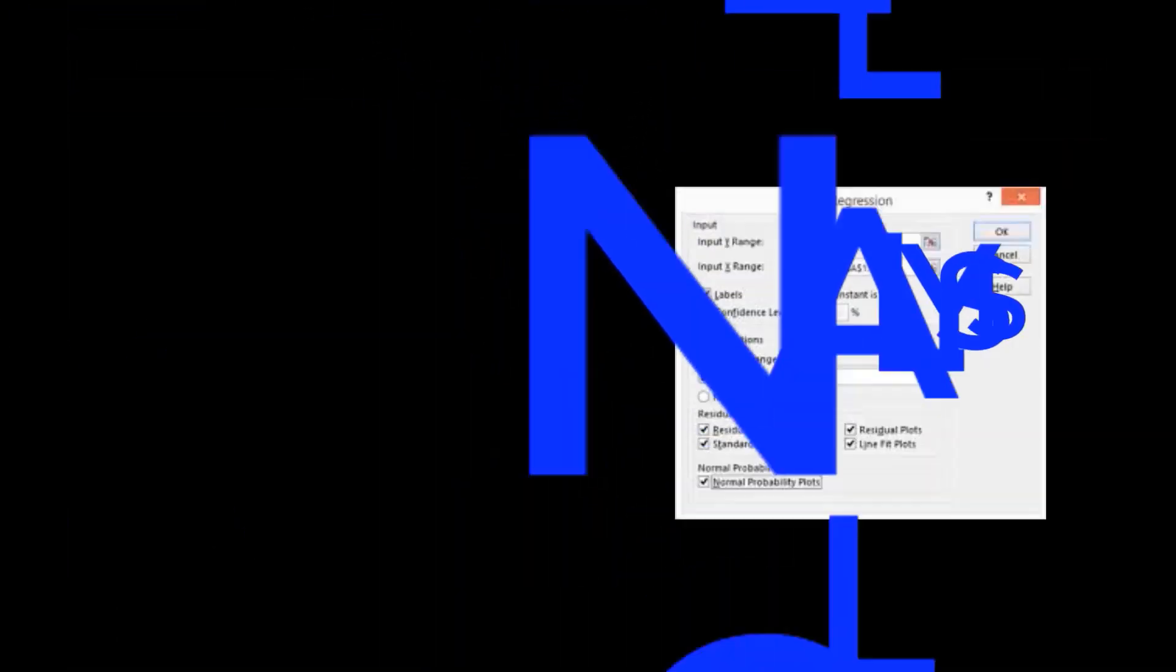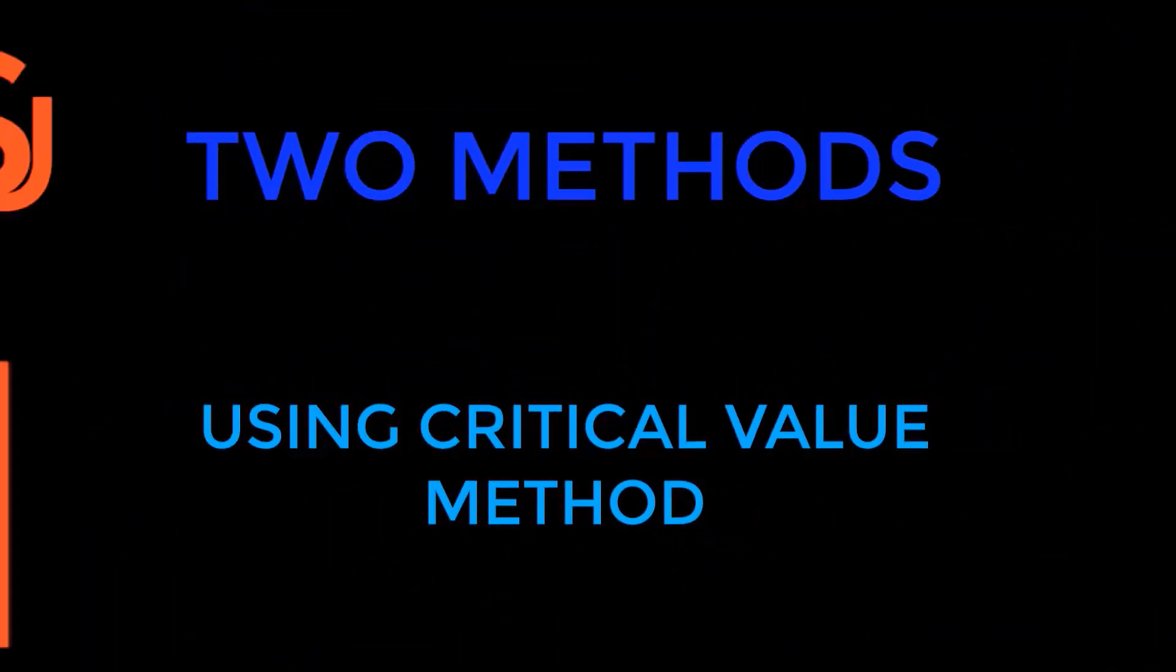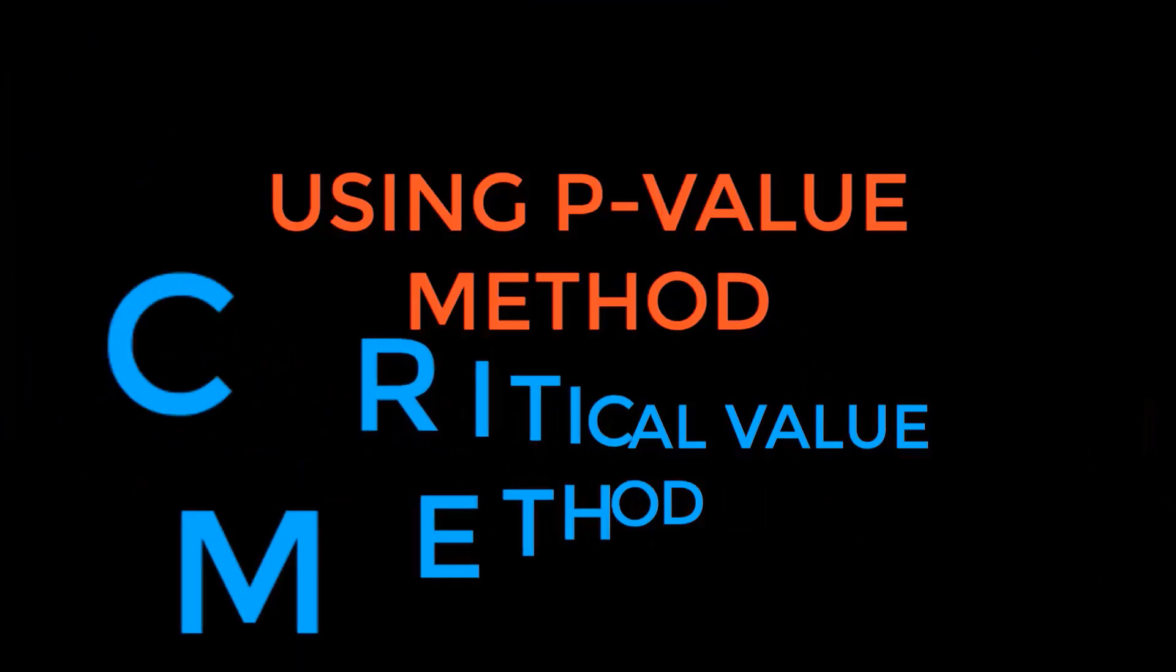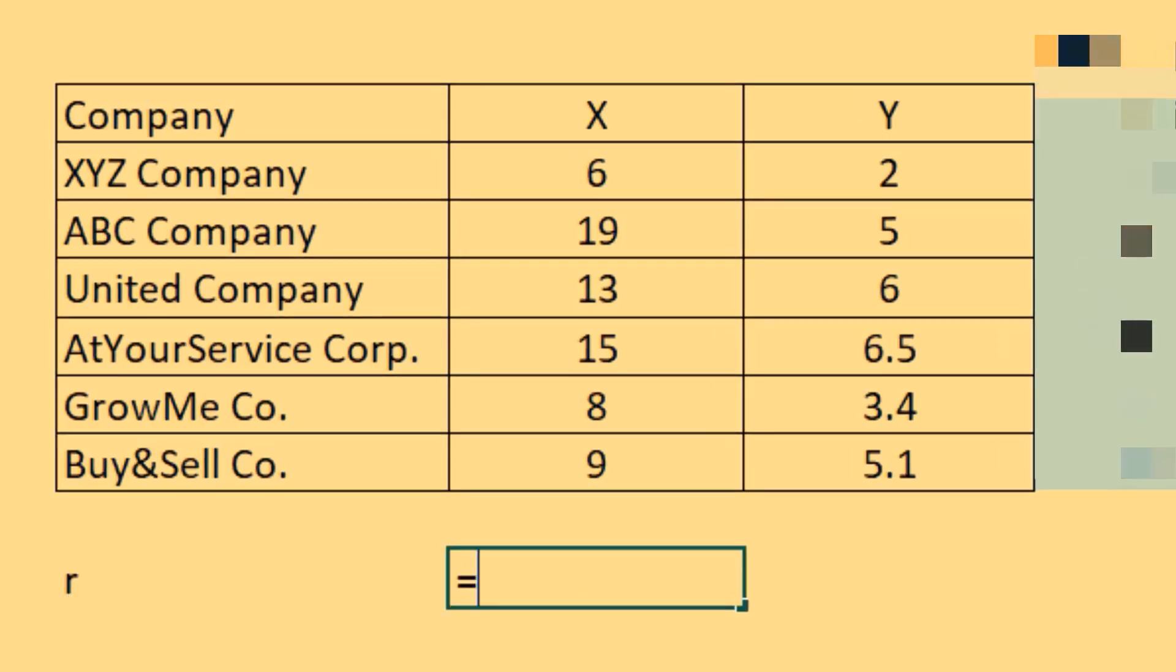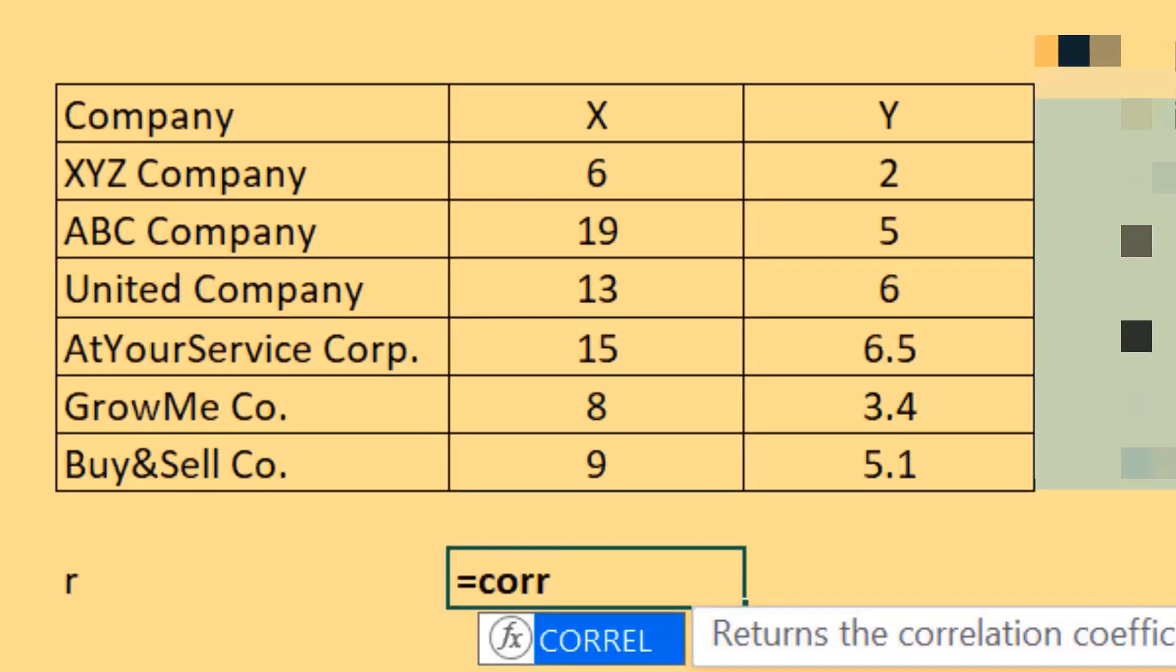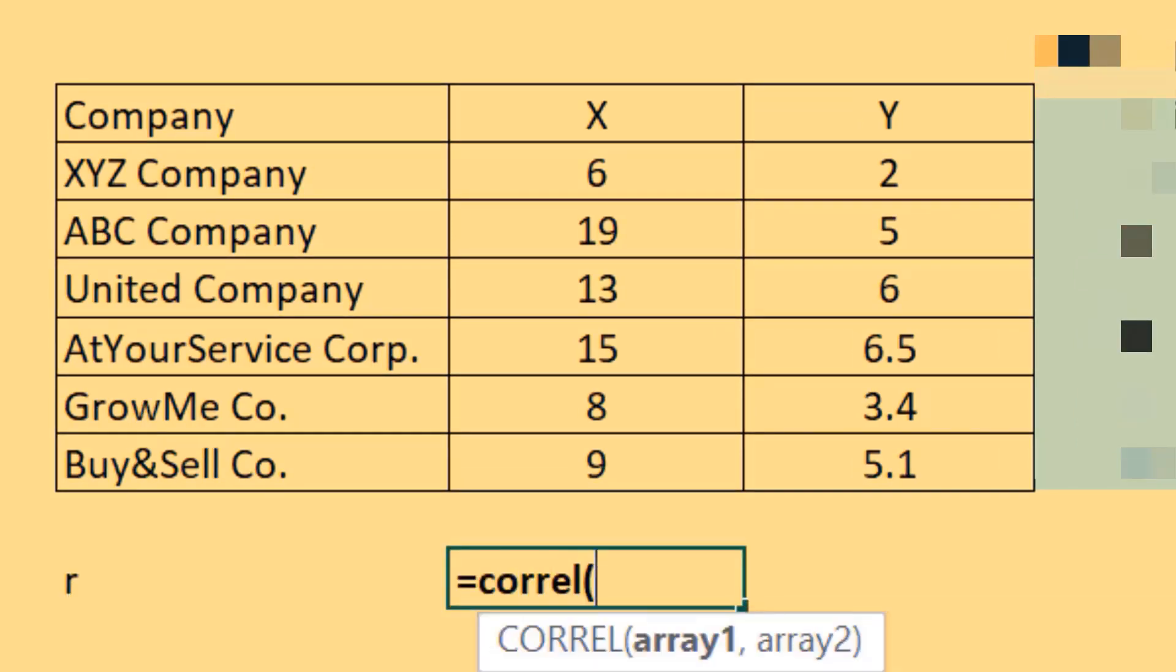Also, we will discuss two methods in testing the significance of correlation coefficient. We obtain observations from a sample of six companies. Let's compute correlation coefficient using Excel CORREL function. We get a correlation coefficient of 0.704025, which suggests strong linear relationship between X and Y.